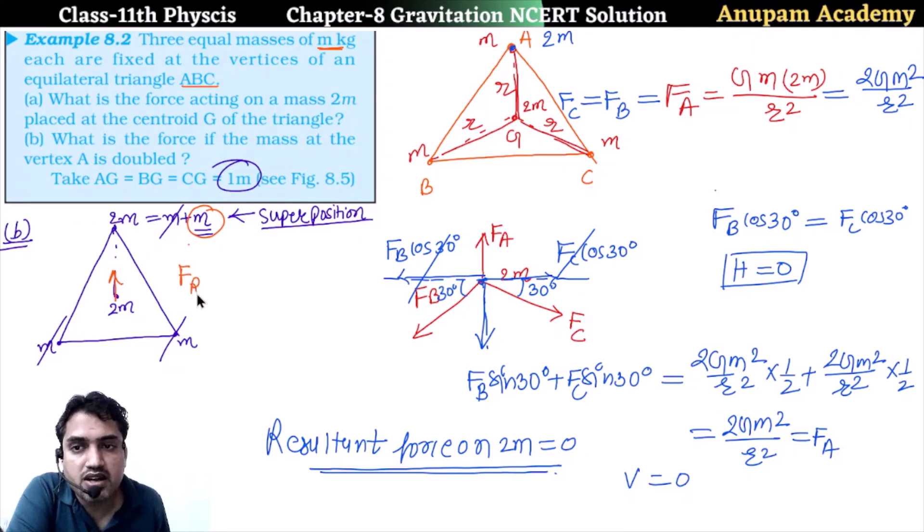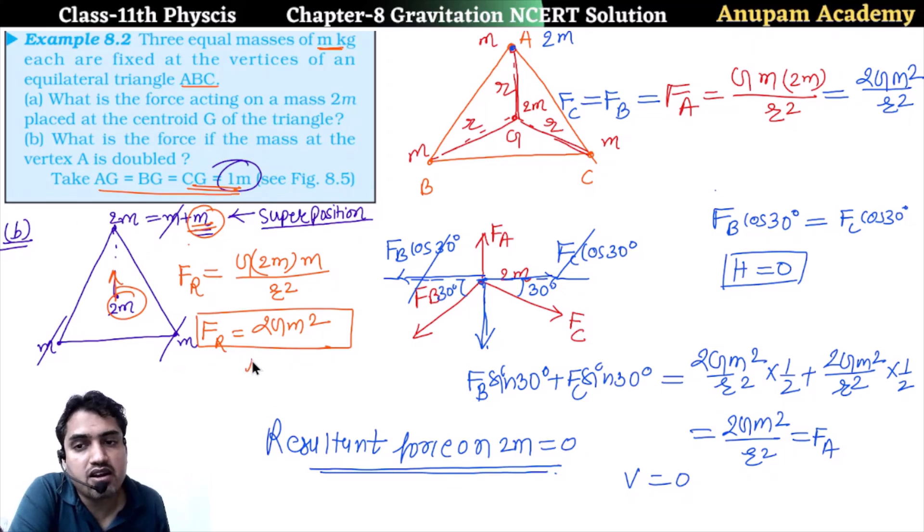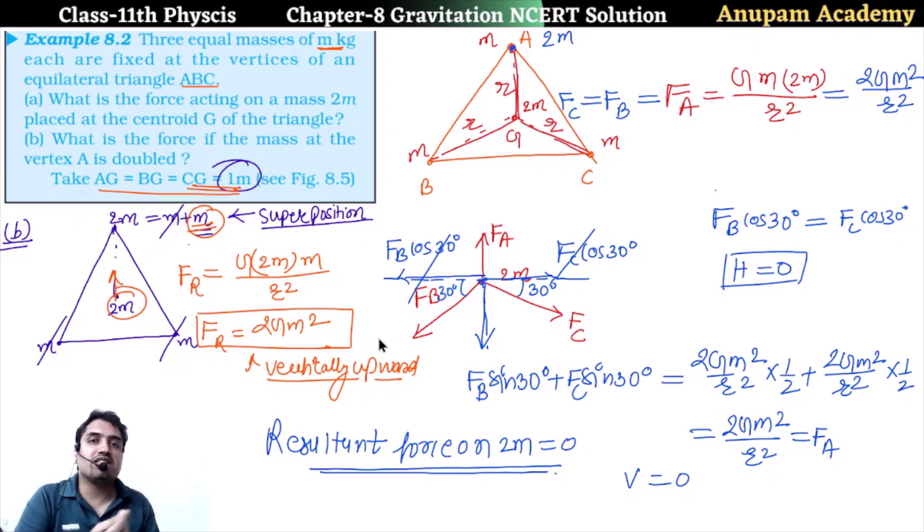So the resultant force is equal to 2Gm² divided by R². That is the answer, and the force will be clearly vertically upward. If you see NCERT, you will have a little bit confused because of i cap, j cap notation. So here we have to keep attention that the three M, M, M, the force will cancel and the extra M will be left. That is the answer. Thank you very much.